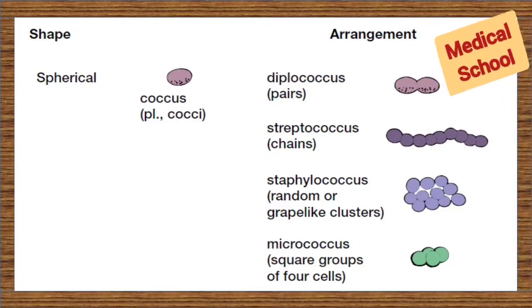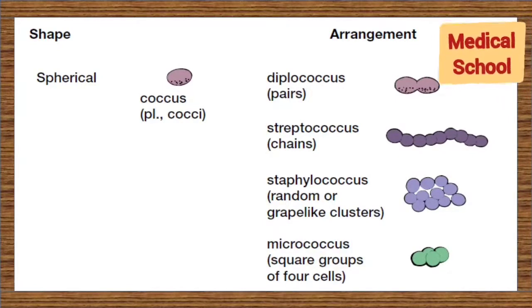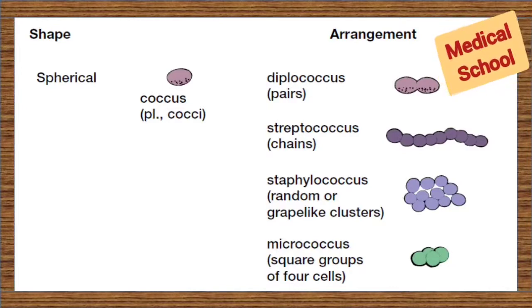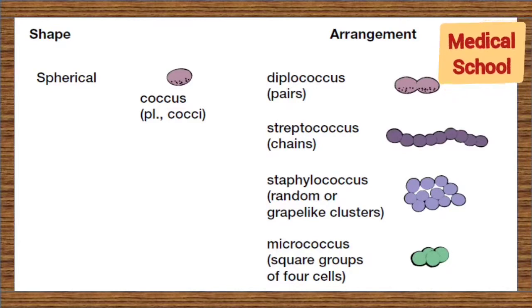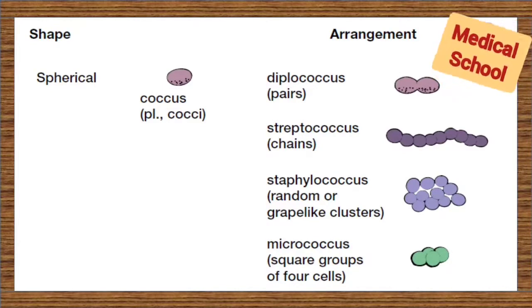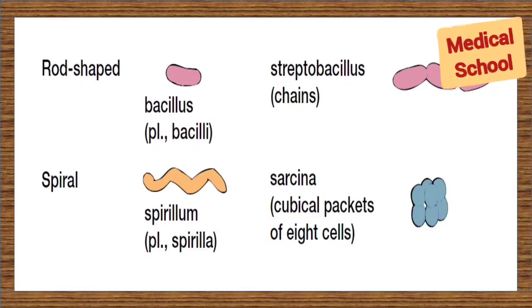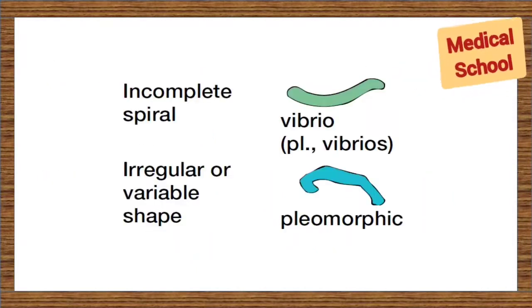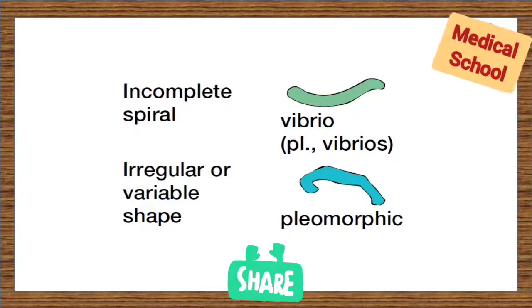First is coccus — it is spherical in shape. According to arrangement, it is classified as diplococcus, streptococcus, staphylococcus, and micrococcus. Next is rod-shaped bacteria. Spiral shape — also look at the arrangement. Incomplete spiral. And last, irregular shaped bacteria.